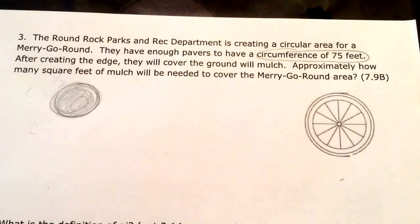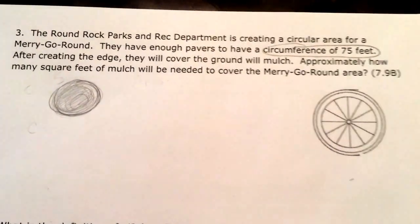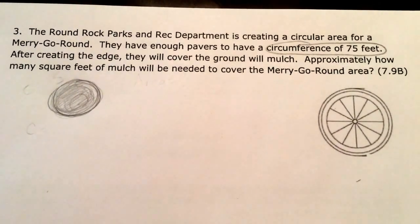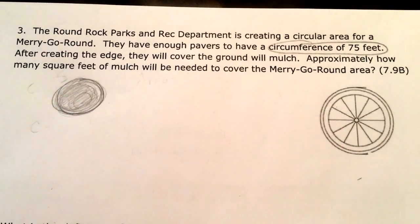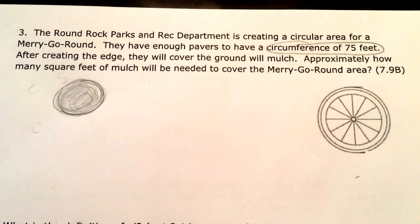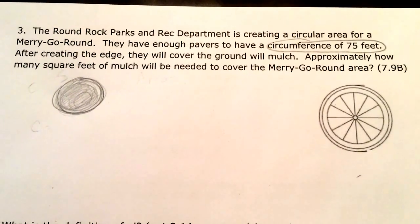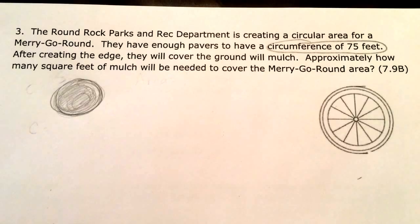The Round Rock Parks and Rec Department is creating a circular area for the merry-go-round. They have enough pavers to have a circumference of 75 feet. After creating the edge, they will cover the ground in mulch. Approximately how many square feet of mulch will be needed to cover the merry-go-round area?